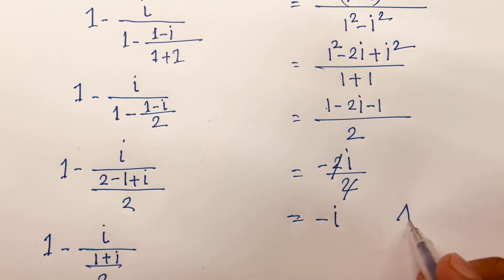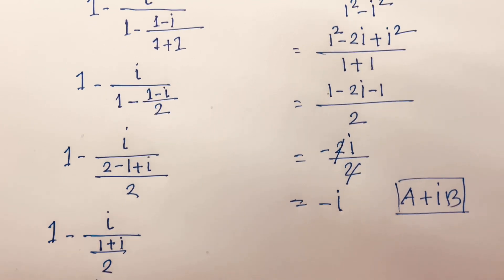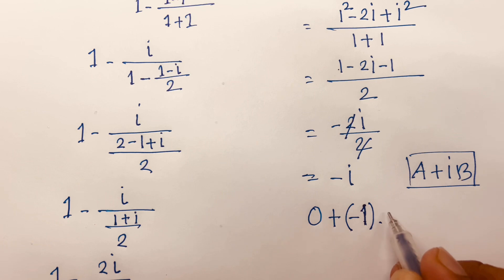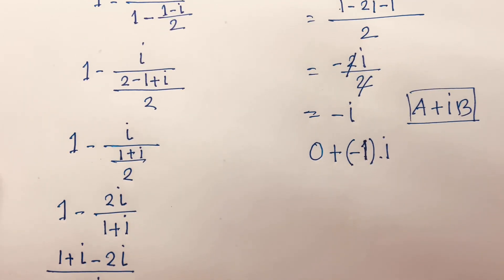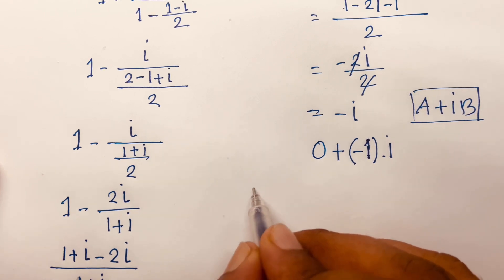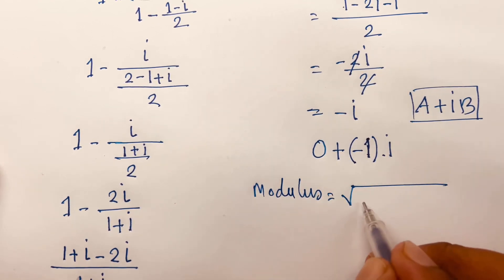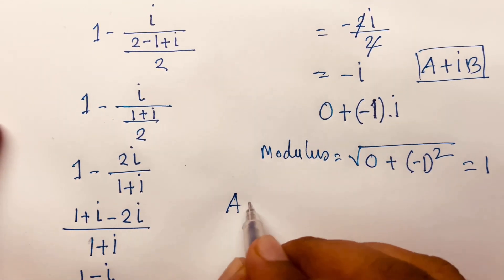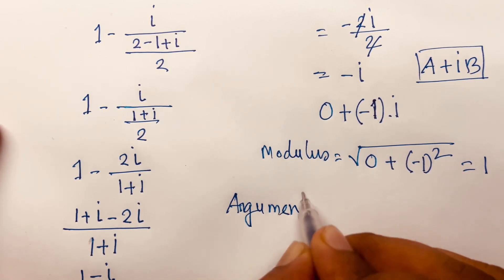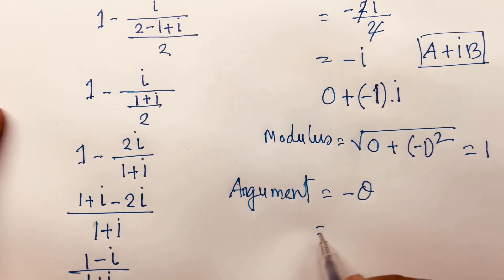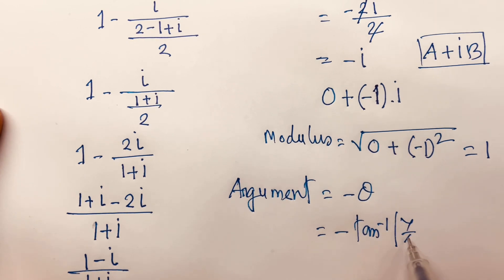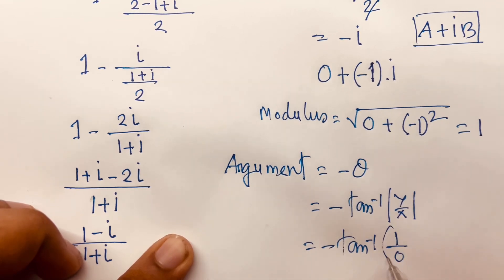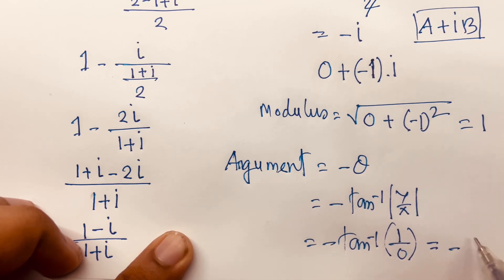Now we will find out the real part and imaginary part. I can say here is 0 plus minus 1 times i. Now we will find out the argument in this problem. First of all we will find the modulus: square root of x squared plus y squared, so square root of 0 squared plus (minus 1) squared equals 1. The argument is minus theta, which equals minus tan inverse (y over x), so minus tan inverse (1 over 0), and we know that minus tan inverse (1 over 0) equals minus pi over 2. This is our final answer.